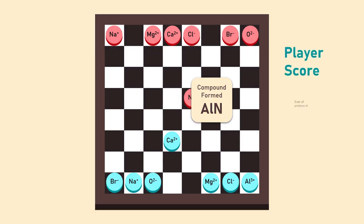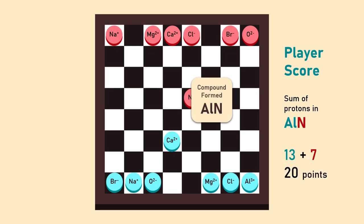The player score is calculated by adding up the number of protons in the two ions of the compound. Like here, in aluminum nitride, aluminum has 13 protons and nitrogen has 7 protons, giving a total score of 20 to the player.